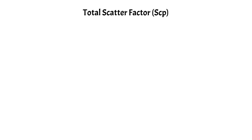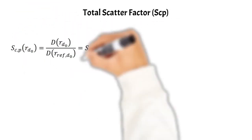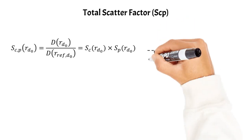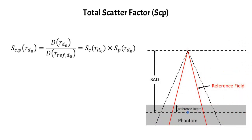Now we can talk about the total scatter factor, or Scp. It's a ratio of doses — one with field size r, defined at a depth of d0 in the phantom, and the other with field size r ref, also defined at depth d0. It is also defined as the product of the collimator and phantom scatter factors. On the right is the geometry used when measuring the total scatter factor — it's measured at SAD, at a reference depth, and is the ratio of doses measured with the collimated field size (the black dotted line) and the reference field size (in red).